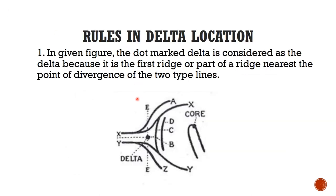The first rule in delta location: the delta is the first ridge or part of a ridge nearest the point of divergence of the two type lines. In the figure, we have type line X and type line Y diverging at a point. The dot — being the first ridge nearest to that point of divergence — is considered the delta.